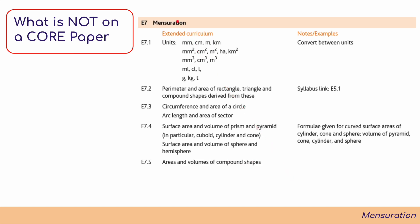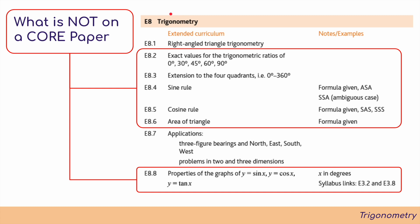For topic seven, Mensuration, this stays the same — core and extended are exactly identical. Moving on to topic eight, Trigonometry, a massive chunk has been added for extended: exact values for trigonometric ratios of 0, 30, 45, 60, and 90 degrees; extensions to the four quadrants; the sine rule; the cosine rule; and area of a triangle. Also added are the properties and graphs of y = sin x, y = cos x, and y = tan x.